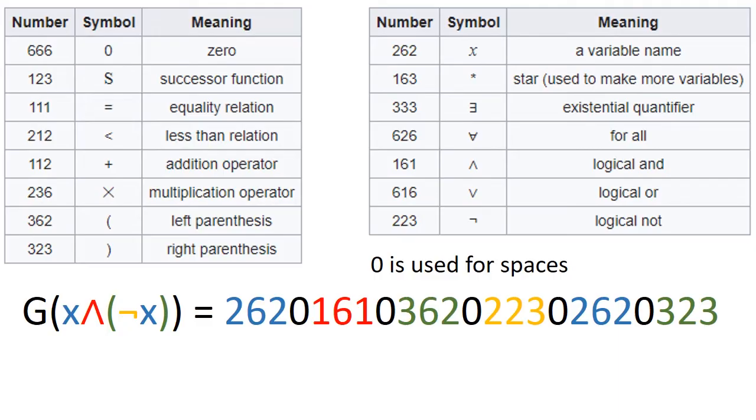To start off proving this, the first step is to encode every logical formula f as a natural number g, which Gödel referred to as Gödel numbering. The idea is to assign the natural number to each symbol and then build up statements by putting together the natural numbers associated with the symbols of that statement. This is quite similar to binary encoding that is used by computers everywhere.